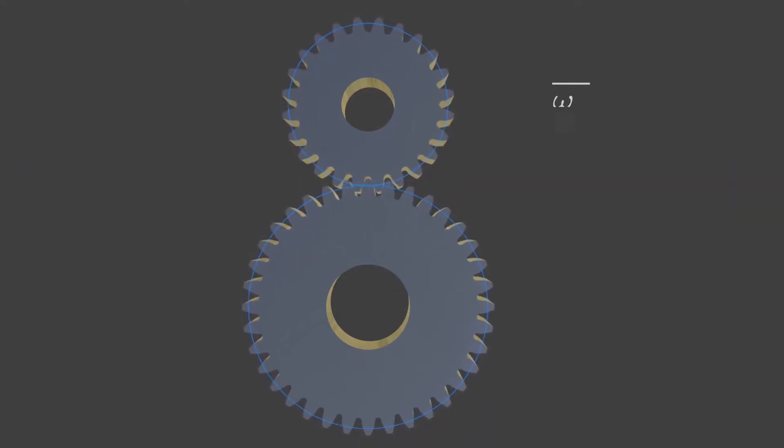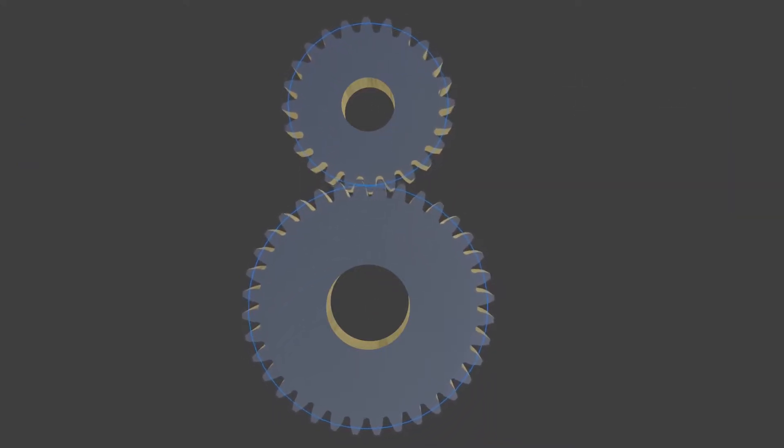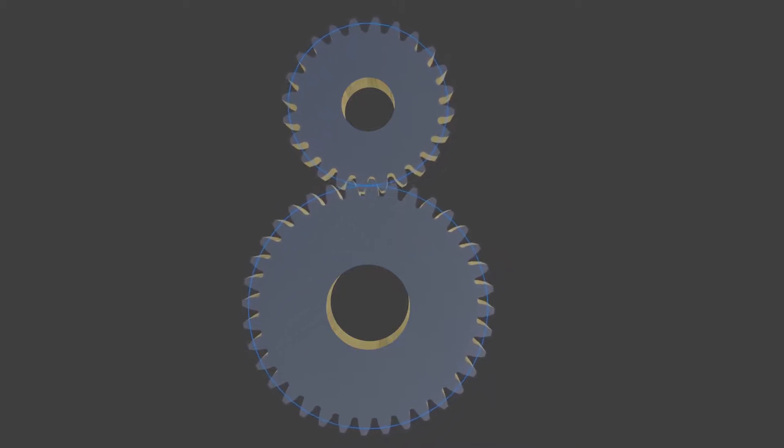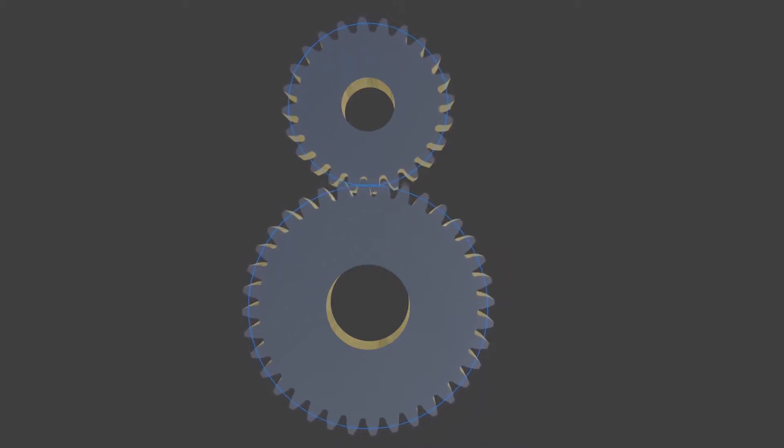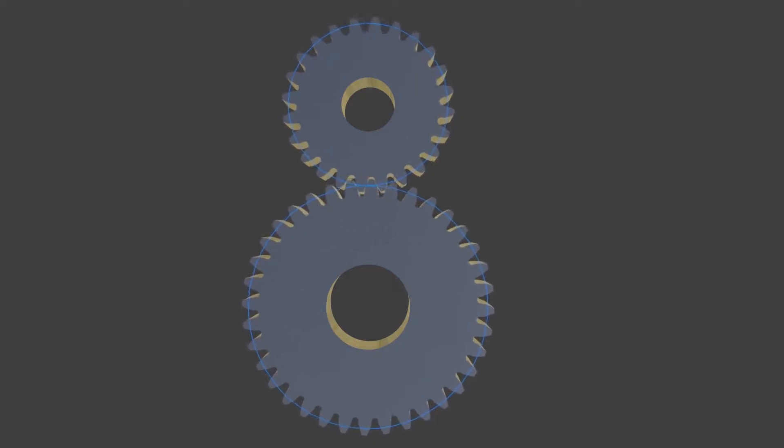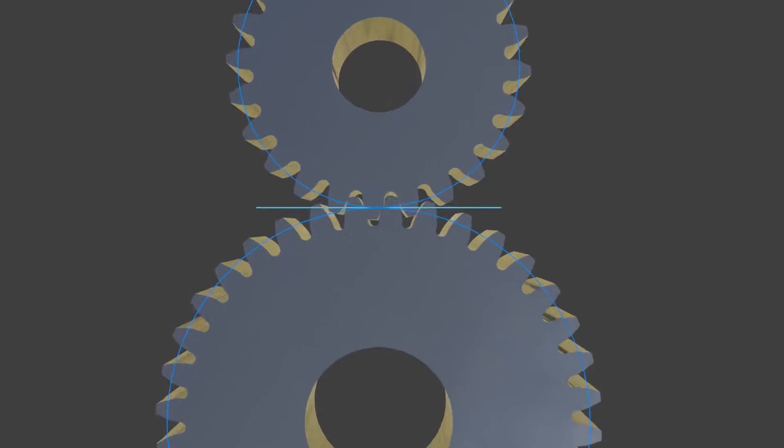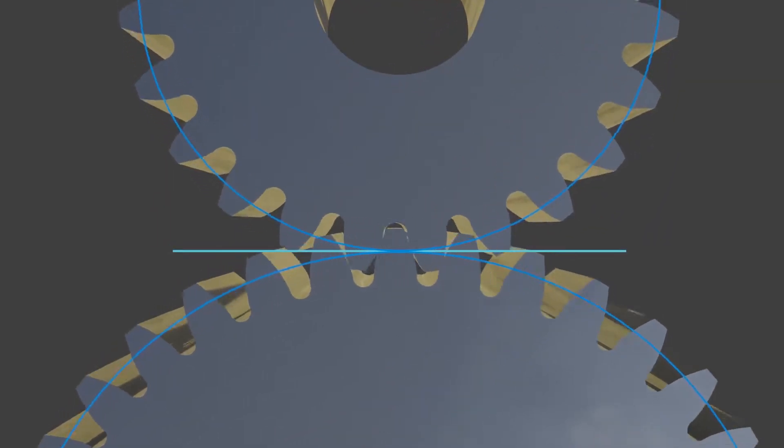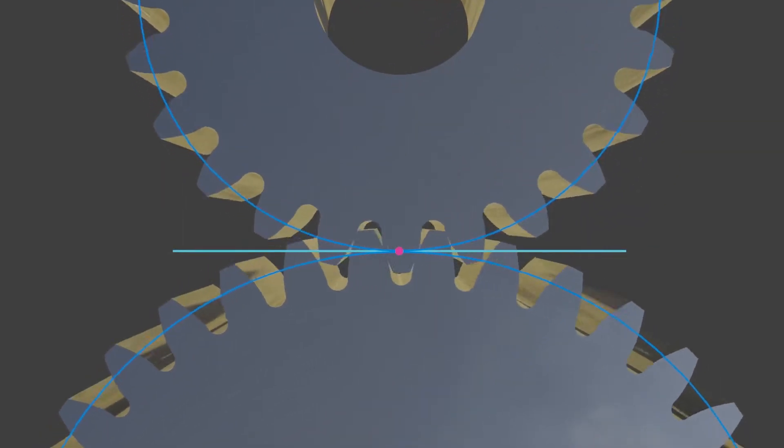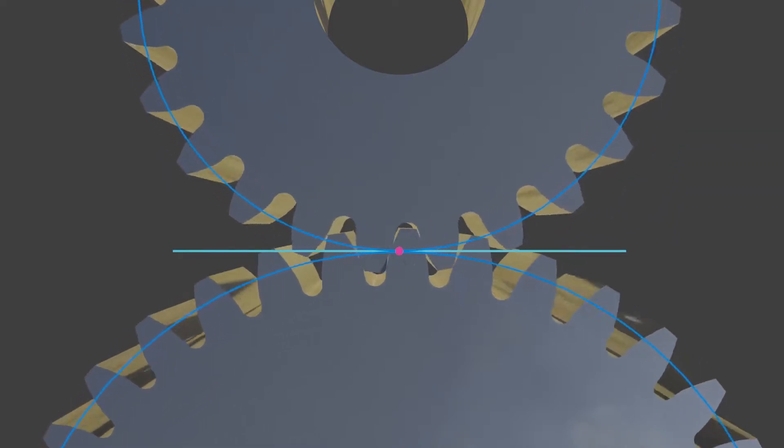The pitch circle is a theoretical circle on which all calculations are based. The pitch circles of a pair of mating gears are tangent to each other. The point of tangency between the two pitch circles is called the pitch point.